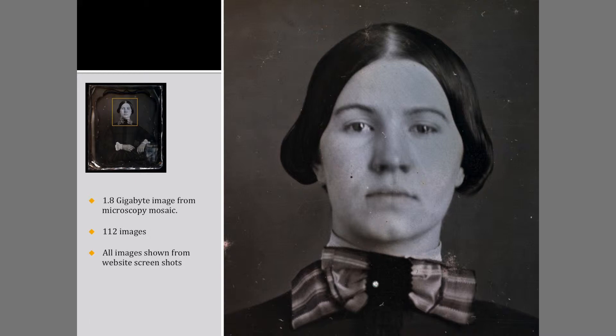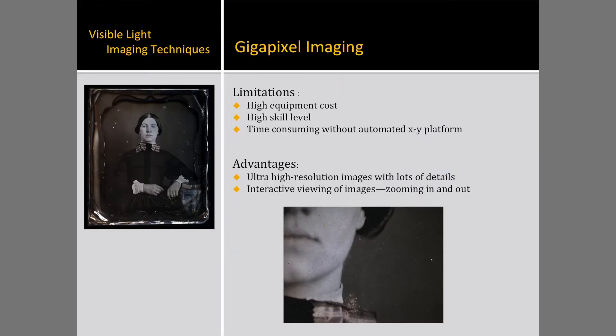The micro-gigapixel image of the daguerreotype includes 112 images and nearly 16,000 by 18,000 pixels, a 1.8 gigabyte file. Gigapixel imaging results in an exceptionally detailed image that allows viewers to zoom into dust particles, biological growth, and even brush strokes found in the hand-painted details of the tablecloth.